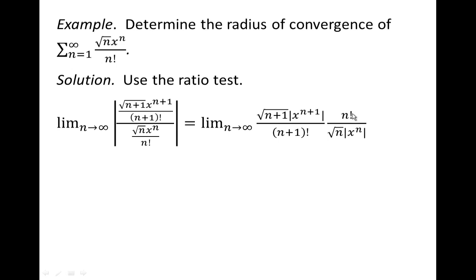We have n factorial in the numerator, n plus 1 factorial in the denominator. n plus 1 factorial is really n plus 1 times n factorial. So that will reduce to just n plus 1 in the denominator. And finally,